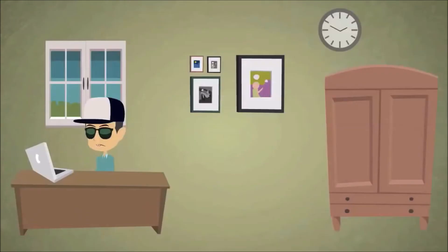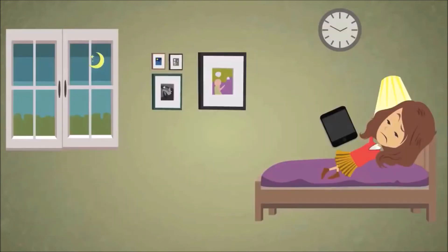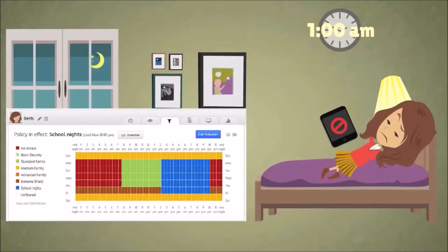You can create a unique schedule for each individual member of the family. For example, a teenager can be restricted from social media during homework time. And kids who like to watch videos late at night can have their internet access turned off, so nothing distracts them from their beauty sleep.